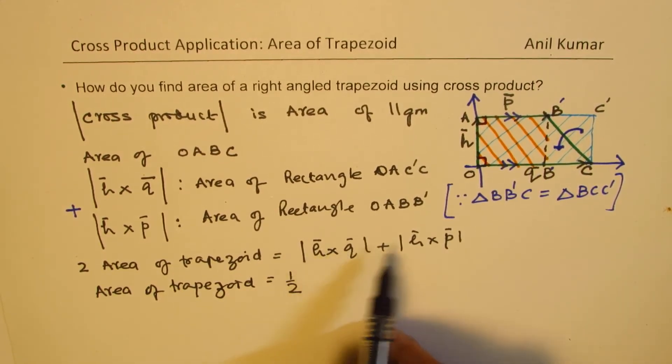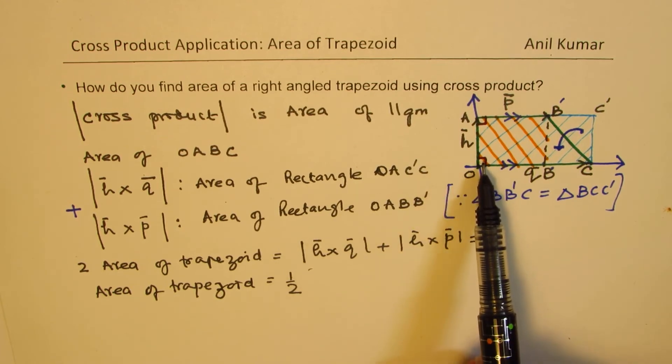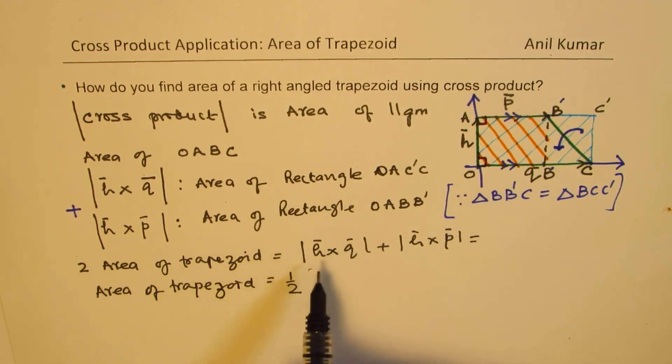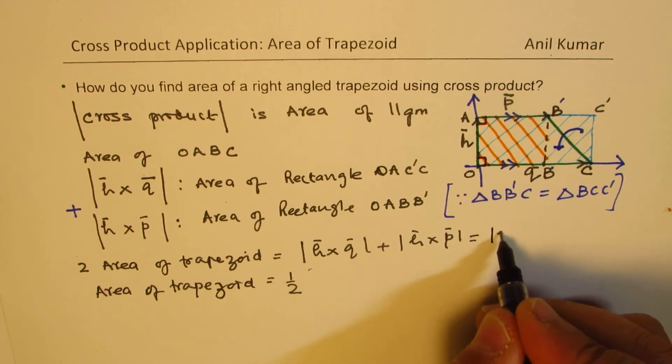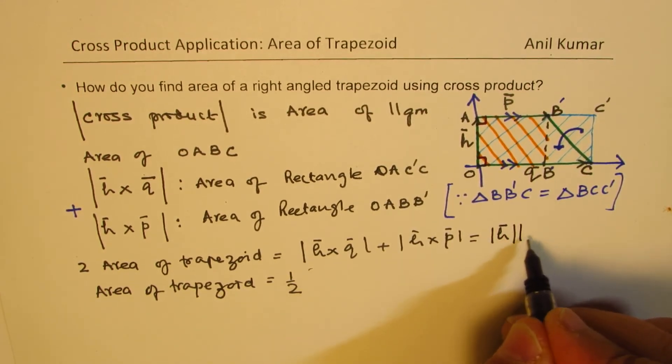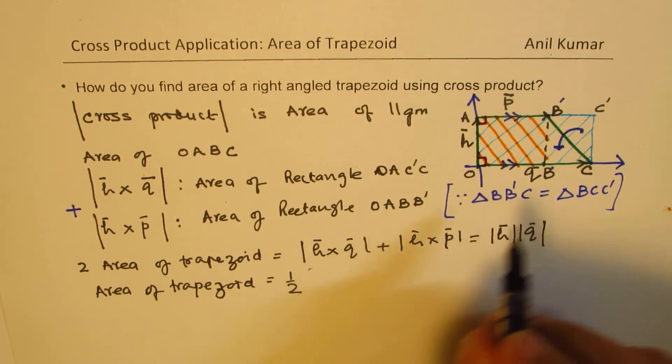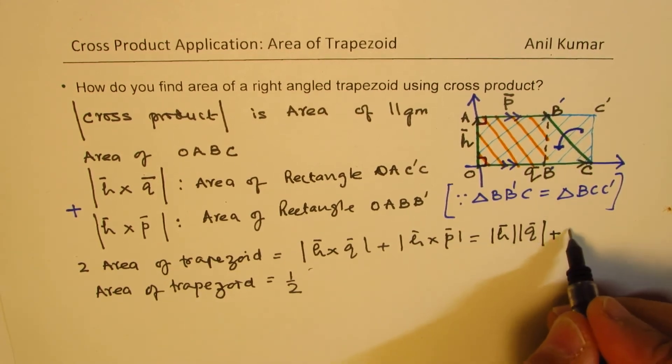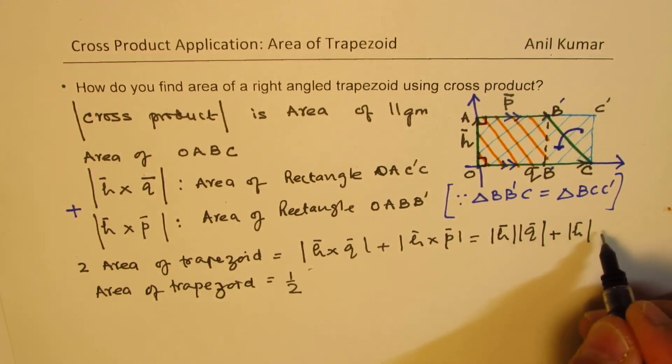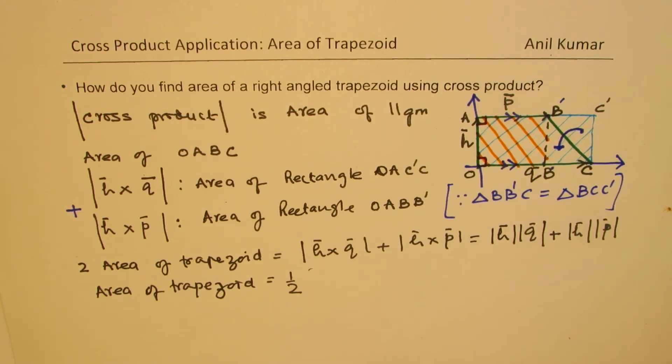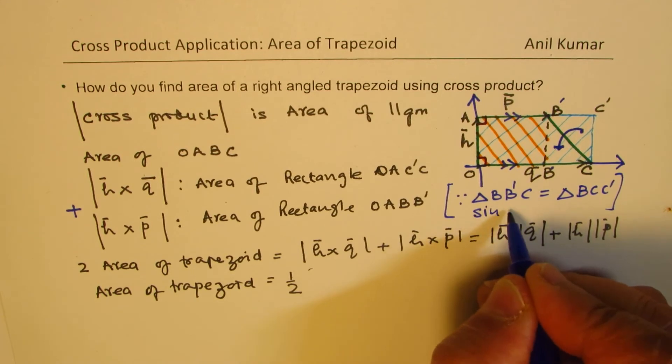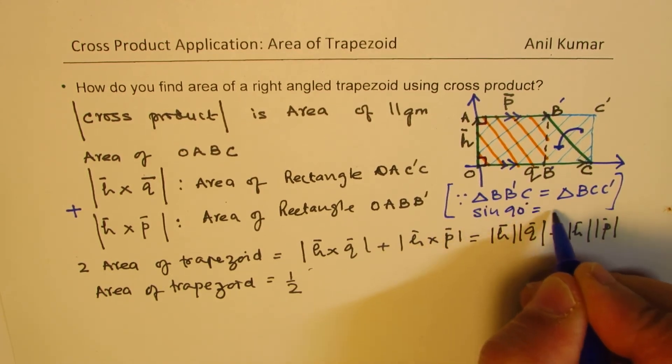We can also write these areas in terms of magnitude and the angle. The angle is 90 degrees. So, this can be written as magnitude of H times magnitude of Q times sine of 90 degrees is 1. So, we'll just write like this. Plus, again, we have magnitude of H times magnitude of P. Since we know that sine of 90 degrees is equal to 1.